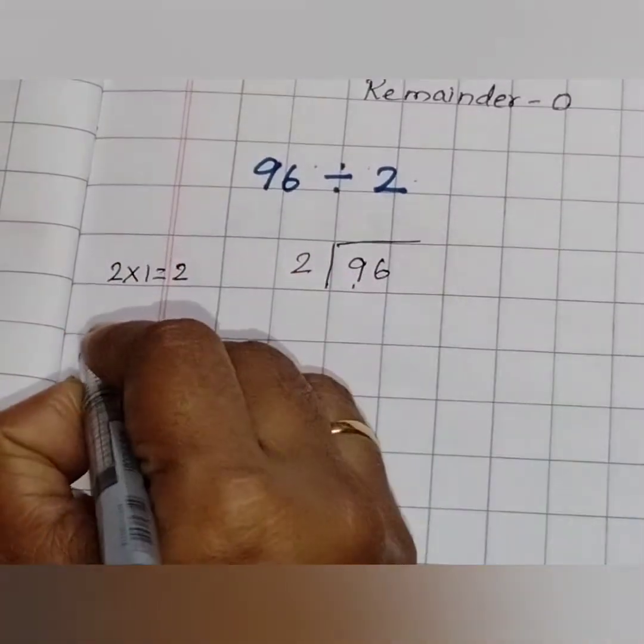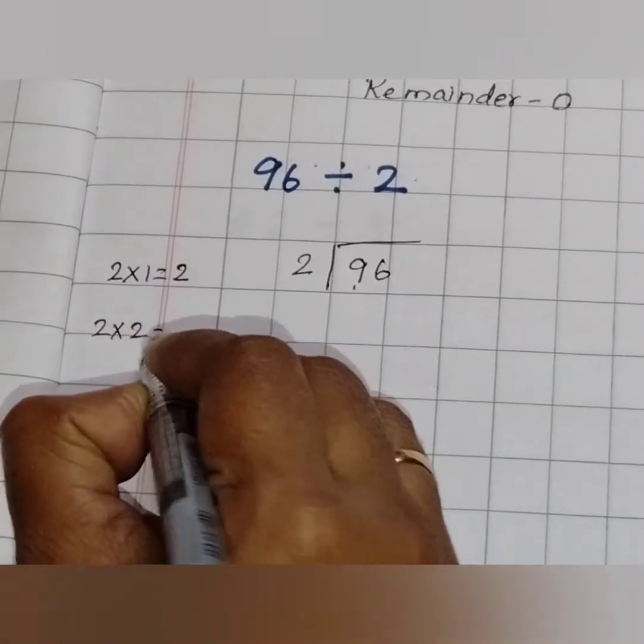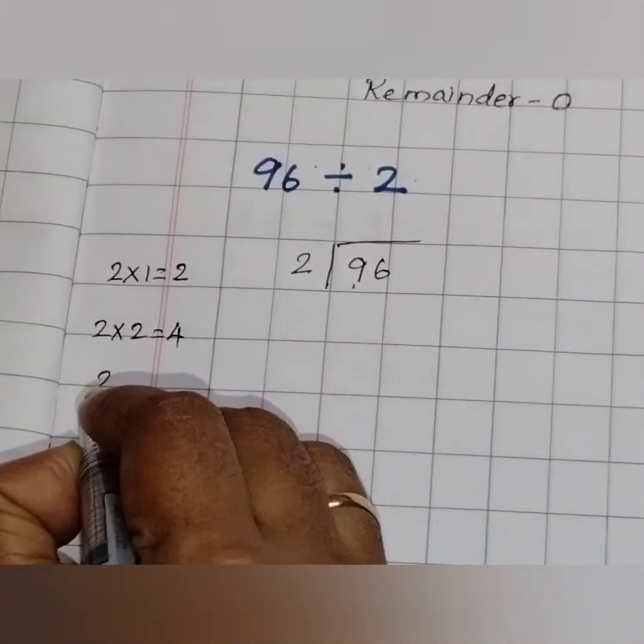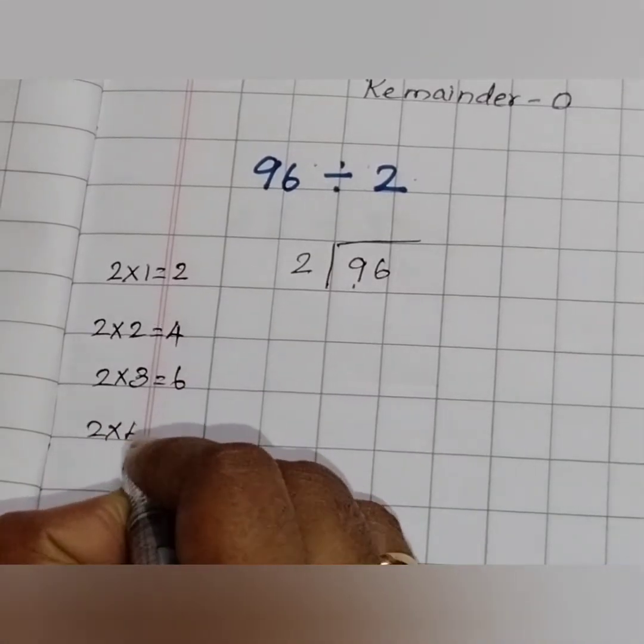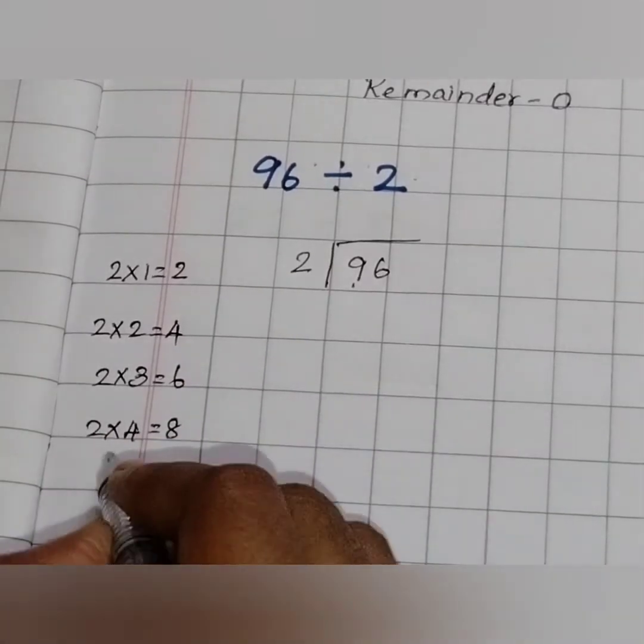Now we have to check whether 9 is there in 2's table. Is it there? Let us just check. 2 fives are 10.